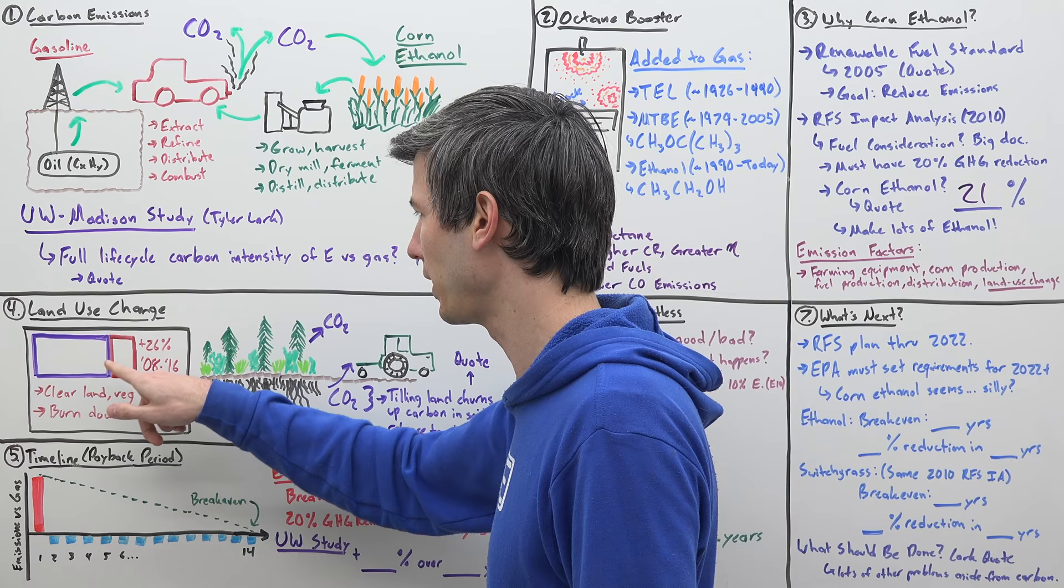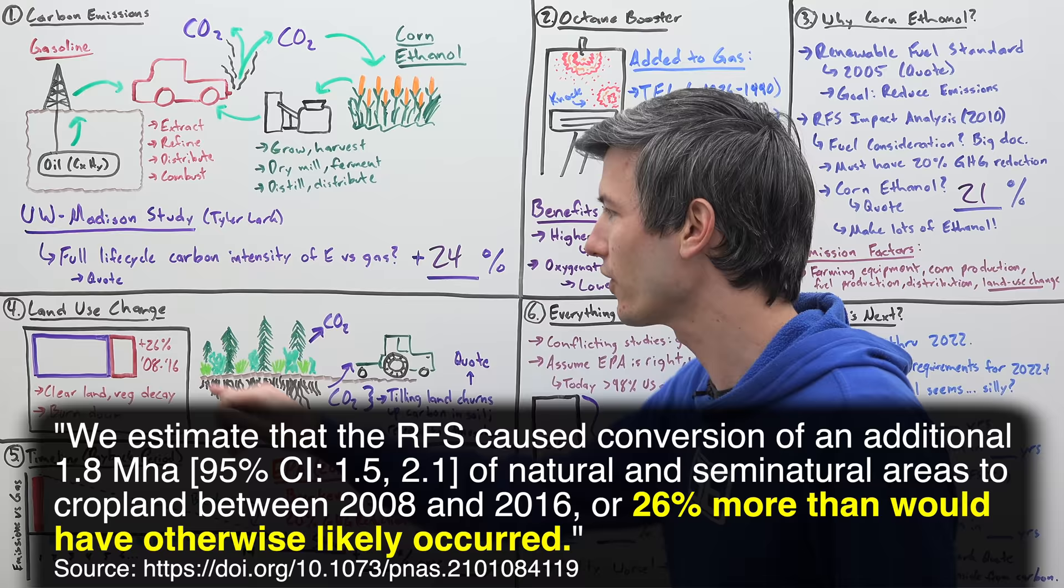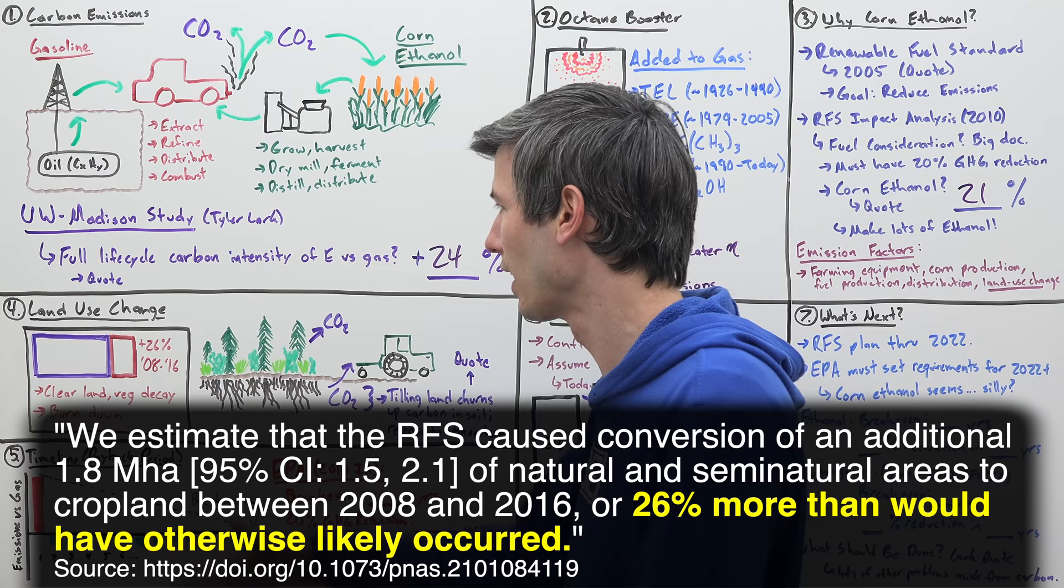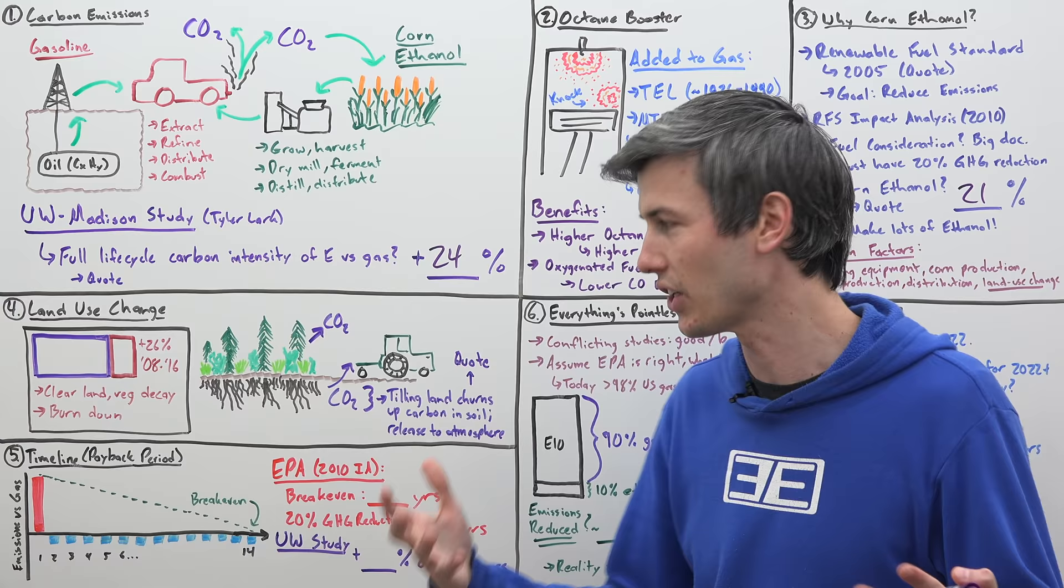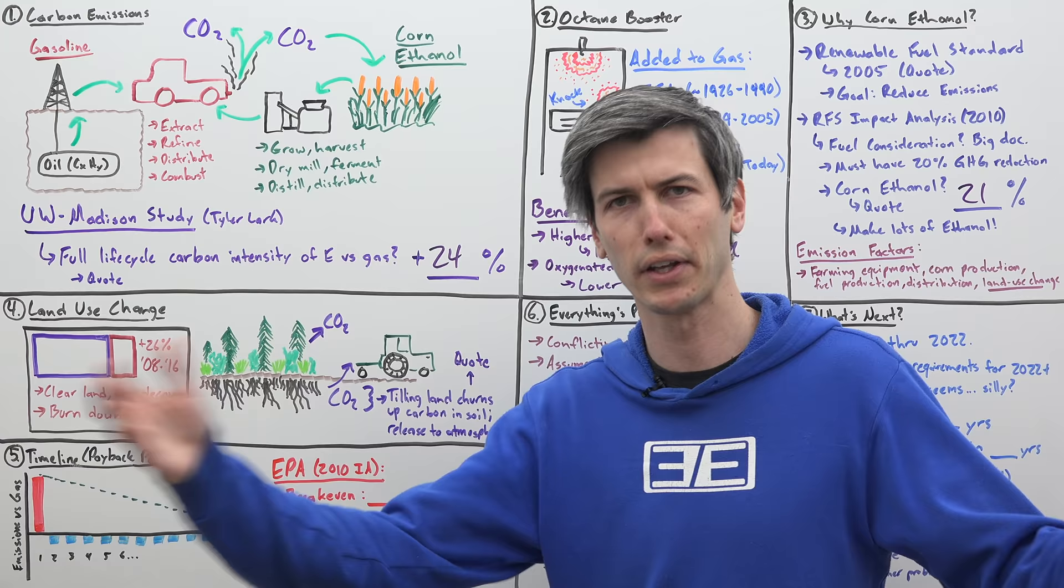Essentially, because we decided, hey, we're going to make all of this ethanol out of corn, farmers said, okay, well, we need more land to make all this corn. So it is estimated by this study that from 2008 to 2016, the amount of land increased to create corn increased by 26%. That is land that otherwise would not have been used for farming according to this study. So you either clear that land and you let that vegetation decay, which of course means you have the carbon emissions from it, or you burn down everything on that land so that you can then use it for farmland. Of course, burning that all down, you're going to have emissions.